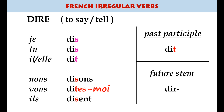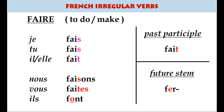Faire means to do or to make — we're becoming very irregular now. Je fais, tu fais, il fait — the sst pattern is familiar — nous faisons, vous faites, ils font with an -ont at the end. The future stem also changes: it uses an e, so je ferai, tu feras, il fera.